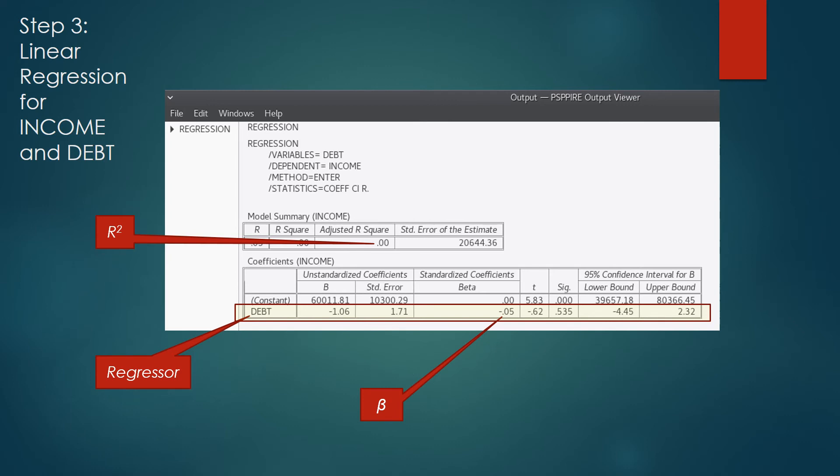Your beta value, or standardized coefficient, is right there. The significance, or p-value, is located right here.